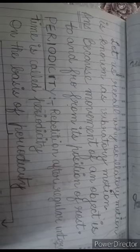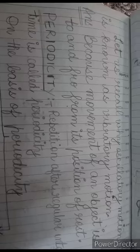Oscillatory motion is known as vibratory motion because movement of an object is to and fro from its position of rest. So that is the main reason oscillatory motion is known as vibratory motion.